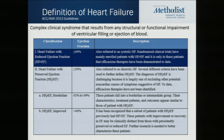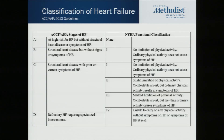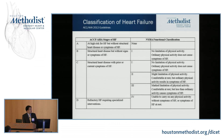Those who have an ejection fraction less than 40% are classified as having reduced ejection fraction, and those above 50 are classified as having preserved ejection fraction. There is a class of folks that fall in the middle, 40 to 50, which falls into this borderline or improved ejection fraction whose characteristics are more consistent with HFpEF. I highlighted HFrEF here because that's going to be what we focus on today.